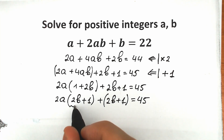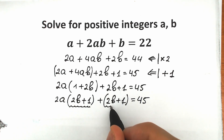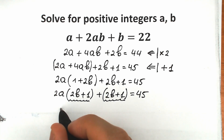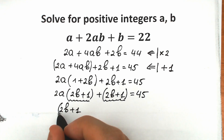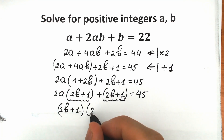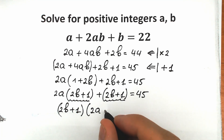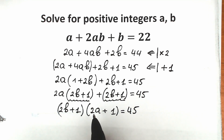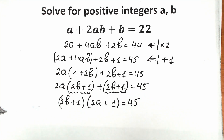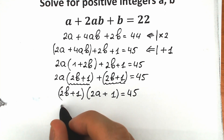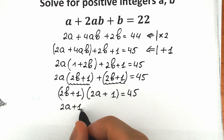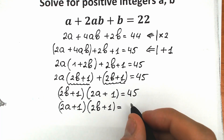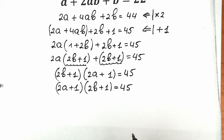We have the same expression inside both parentheses, so let's factor this expression. We get (2b plus 1) times (2a plus 1) equal to 45. Rearranging: (2a plus 1) times (2b plus 1) equals 45. So we have factored our challenge.